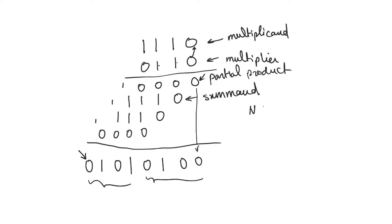This is generally what happens when you have operands of equal size. If you have two operands that are n bits each, the product is going to be 2n bits long. If the operands are of unequal length, the length of the product is going to be the summation of the word length of each of the operands.